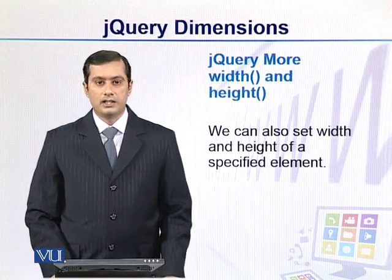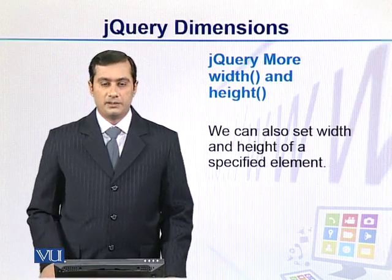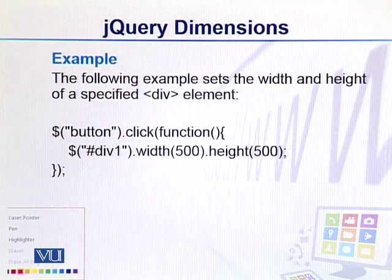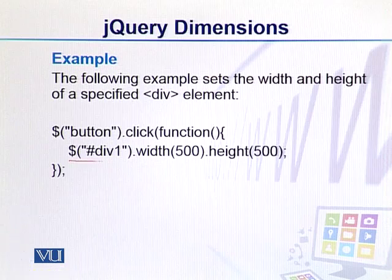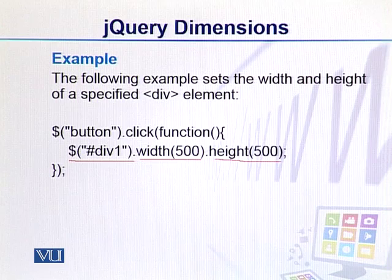In this example, we select one element — div1 — and get and display its outerWidth and outerHeight. The width and height methods in jQuery can also be used to set values. We can set a particular element's width and height, and similarly change properties like padding and other things using the CSS method as we want.